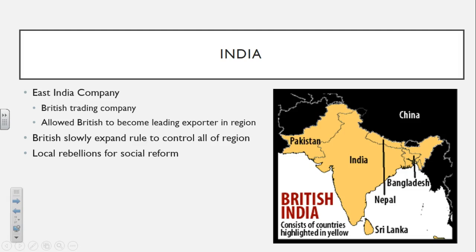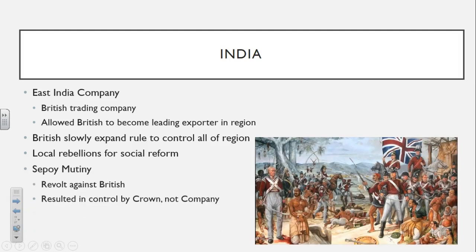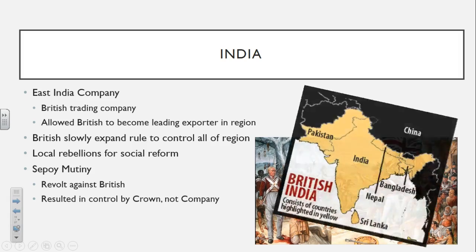Local rebellions are going to start to happen, and these rebellions are going to cause a number of social reforms. People native to this region are tired of the British controlling it and want to get their own way out. One of these is going to be the Sepoy Mutiny, a revolt against the British. The biggest thing that happens is that control is going to change from the East India Company to being controlled by the Crown — the actual king and queen of England.